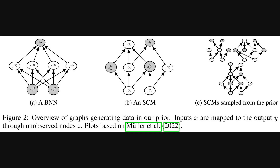Building on that, the offline training phase uses data generated from a prior. Figure two gives us more insight into that — it shows examples of the kinds of graphical structures they use to generate all that synthetic data. You can see examples labeled like a Bayesian neural network, or BNN, and also some structural causal models, or SCMs. These models are basically how they create those diverse datasets for the offline training, teaching Tab PFN about different possible data structures before it ever sees a real problem.